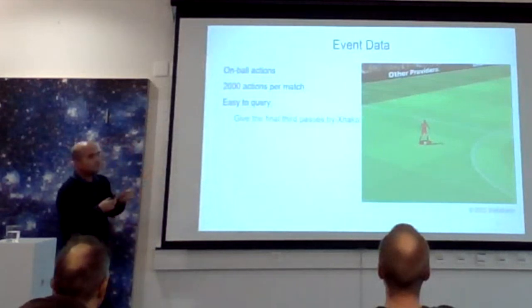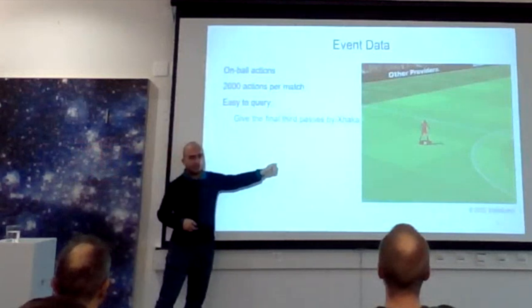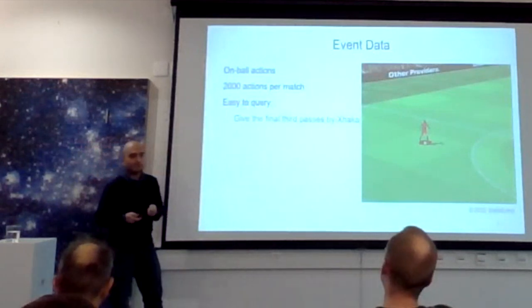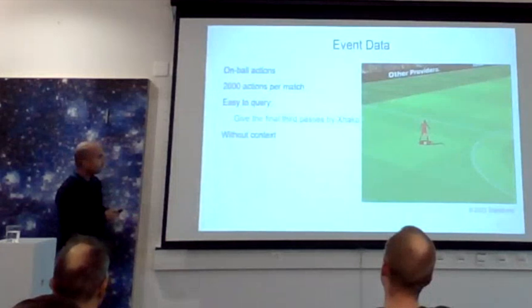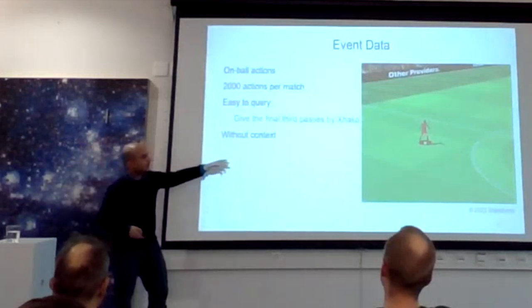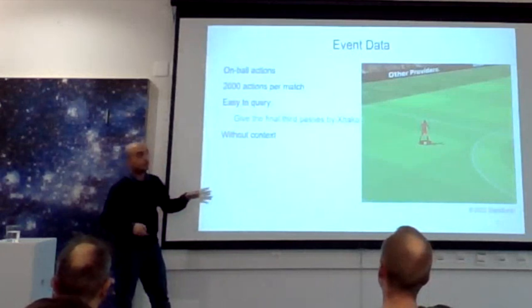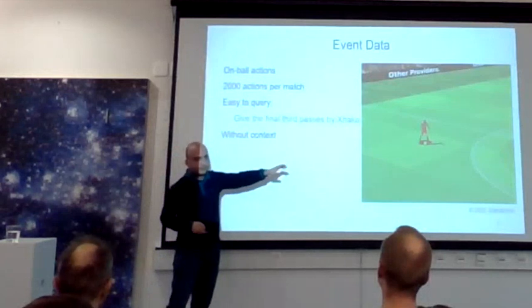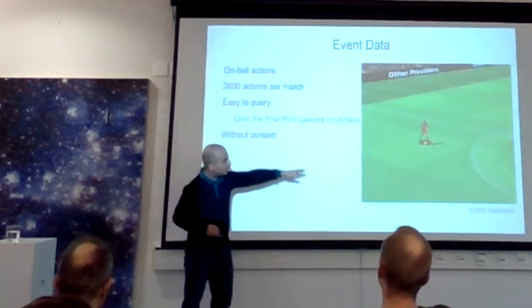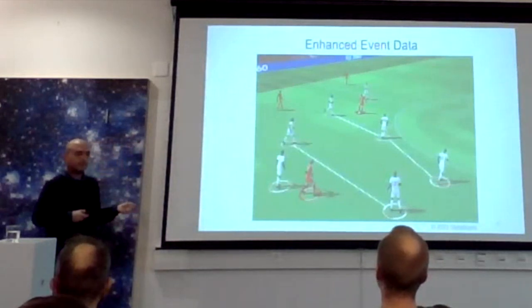It's easy to write queries like 'give me all the final passes by a specific player,' count them, and check whether they were successful or not. But as I said, you don't really have the full context. You know the player passed the ball at a specific location, but you don't know how many other passing options were available, or whether the pass was made under pressure, since you don't have the positions of the other players.